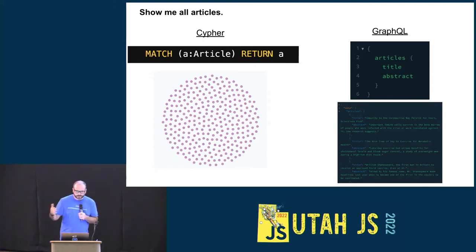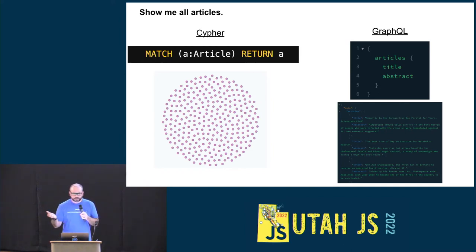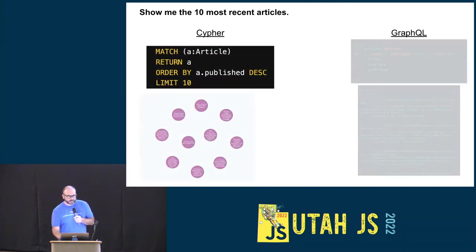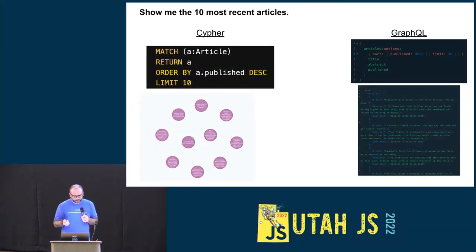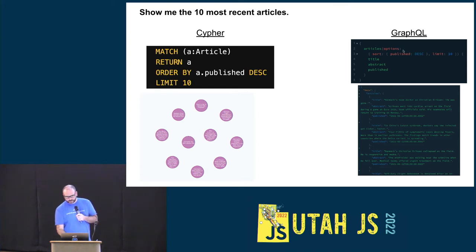Let's compare some queries. 'Show me all the articles': in Cypher, we describe a graph pattern using ASCII art to find all article nodes and return them. In GraphQL, we have an articles query and return just title and abstract. 'Give me the 10 most recent': in Cypher we use ORDER BY and LIMIT. In GraphQL, that sort of functionality isn't built in — we design it using field arguments. Here we have an options argument on our root query: sort by publish date descending, limit 10.